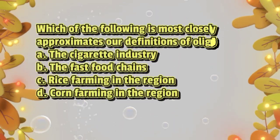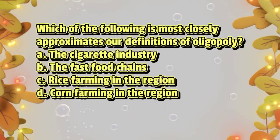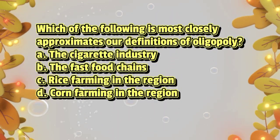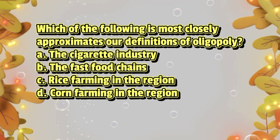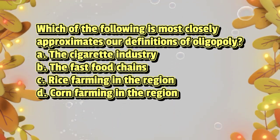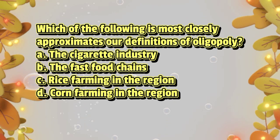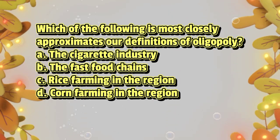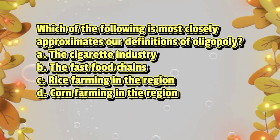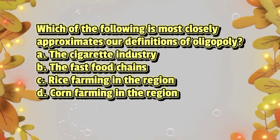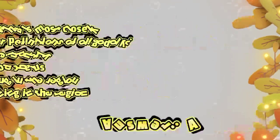Which of the following most closely approximates the definition of oligopoly? A. The cigarette industry, B. The fast food chains, C. Rice farming in the region, D. Corn farming in the region. The answer is letter A.